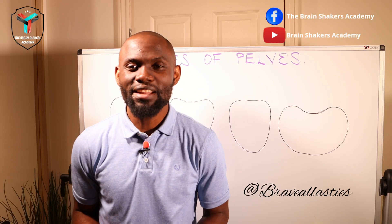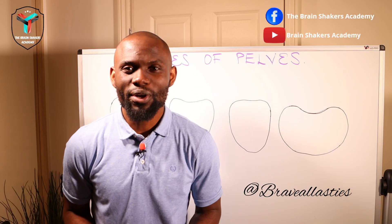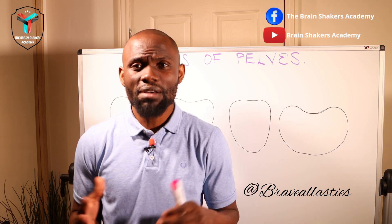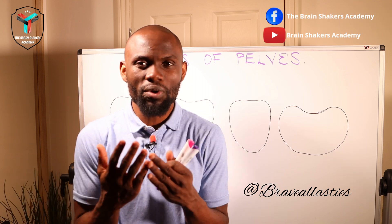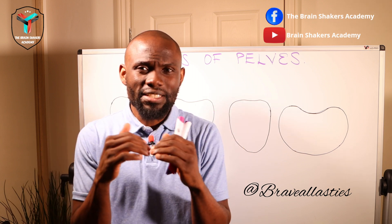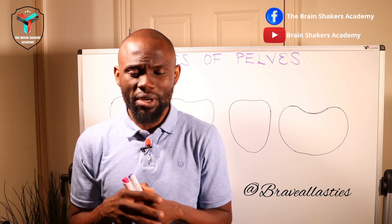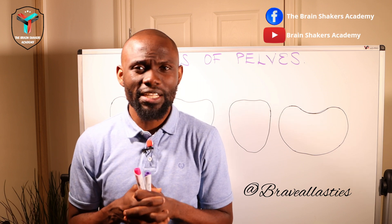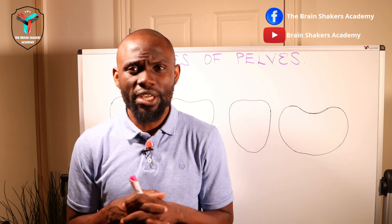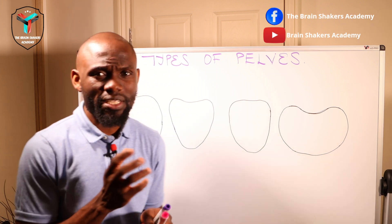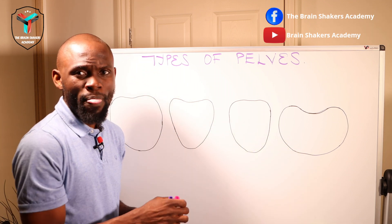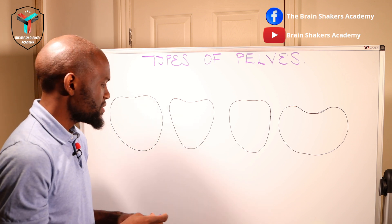Hello Brain Shakers! Welcome to the Brain Shakers Academy. Brave Alistis here. In today's session we're going to be looking at the types of the female pelvis. The female pelvis comes in different forms depending on how the bones are aligned and whether the bones are folding inwardly, affecting the diameters of the pelvic brim. I have looked at the applied anatomy of the female pelvis in a separate video on the Brain Shakers Academy YouTube channel. Now let's look at these four diagrams I have put here to represent the pelvic brim of the different types of the female pelvis.